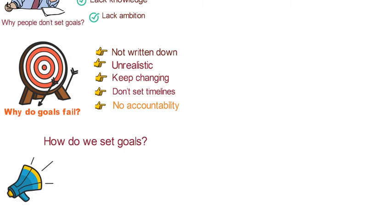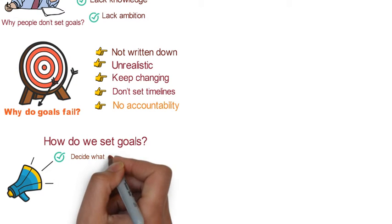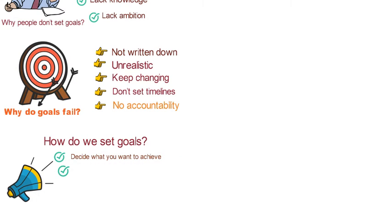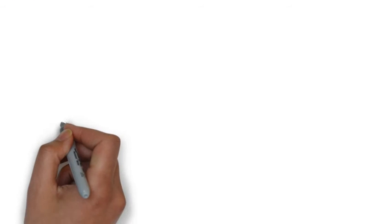So how do we set goals? There are basically two steps to goal setting. The first is decide what you want to achieve, and the second is design an action plan to achieve it.